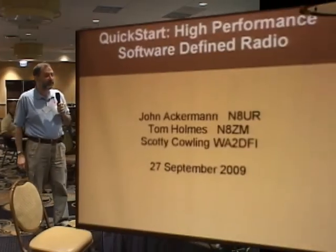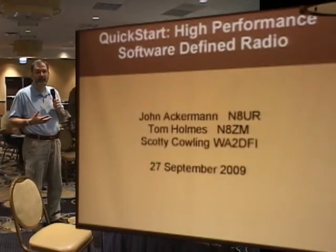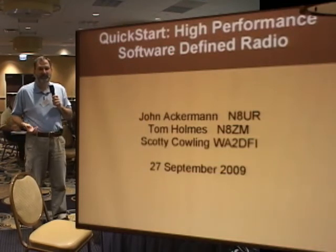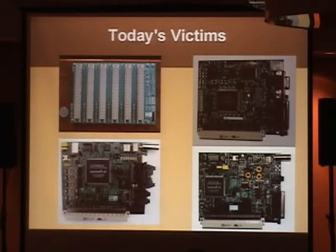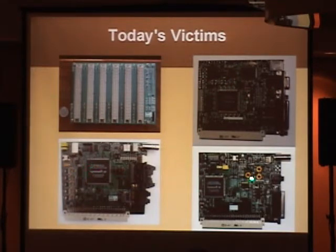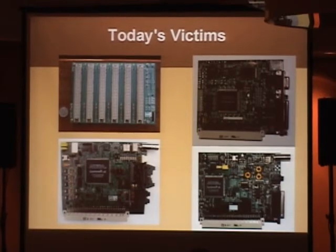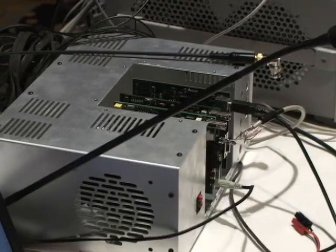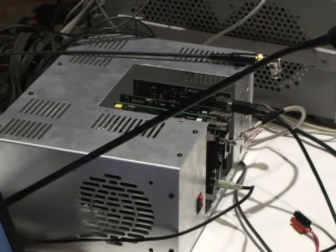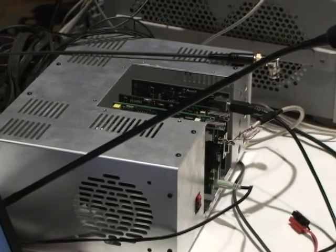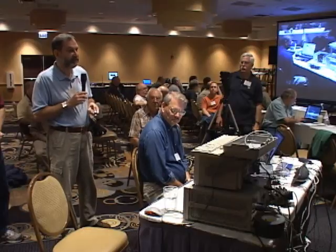We're now going to do a quick start presentation on how to actually get your HPSDR software and hardware running. These are the components on the screen for today: the Atlas backplane, the Ozzy controller in the upper right, the Mercury receiver, and the Penelope transmitter in the lower right. Those boards are installed in the prototype Pandora — it's not painted, but it's the same configuration as the production units. There's also an LPU power supply installed in the box.